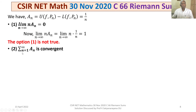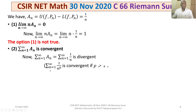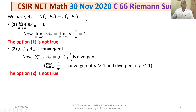For Option 2: sigma n=1 to infinity of An = sigma n=1 to infinity of 1/n. By the p-series test, sigma 1/n^p converges if p > 1 and diverges if p ≤ 1. Here p = 1, so sigma n=1 to infinity of 1/n is divergent. Hence sigma An is divergent, and Option 2 is not true.